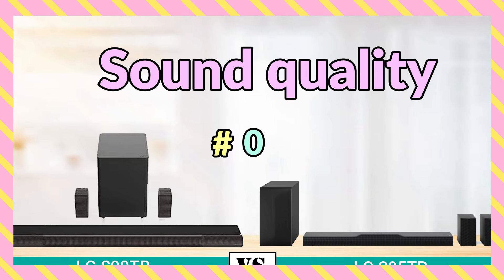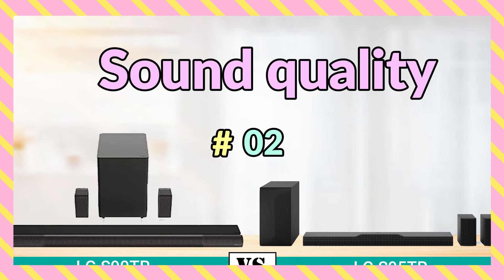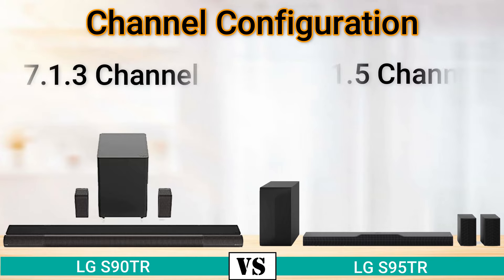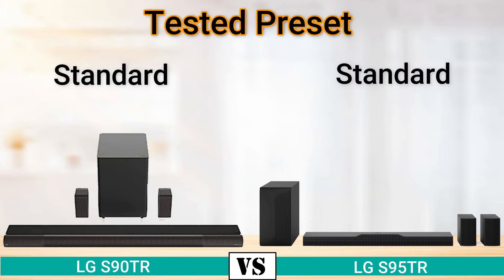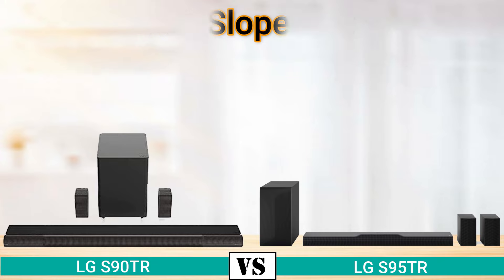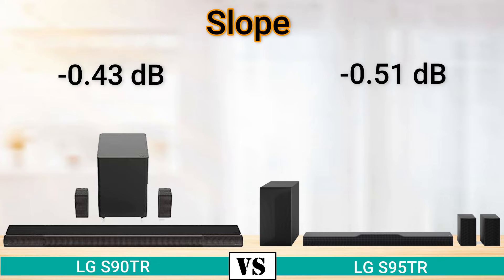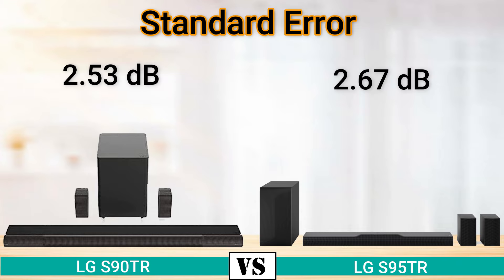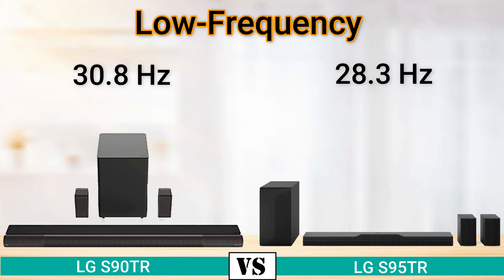Part 2 — Sound Quality. Channel configuration: 7.1.3 channel and 9.1.5 channel. Trusted preset standard flat: minus 0.43 dB and minus 0.51 dB. Standard error: 2.53 dB and 2.67 dB. Low frequency: 30.8 Hz and 28.3 Hz.